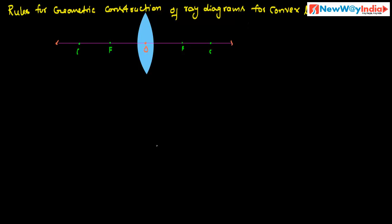What is the first rule? When a ray of light travels parallel to the principal axis, after refraction — that means after passing through the lens — it will pass through the principal focus. This incident ray is parallel to the principal axis, and after passing through the lens, it passes through the principal focus. This is the first rule for constructing ray diagrams.